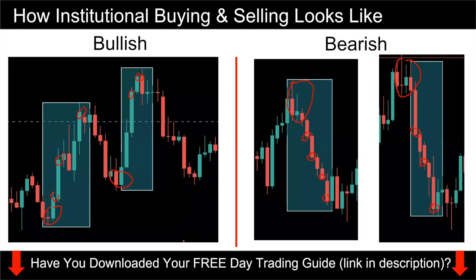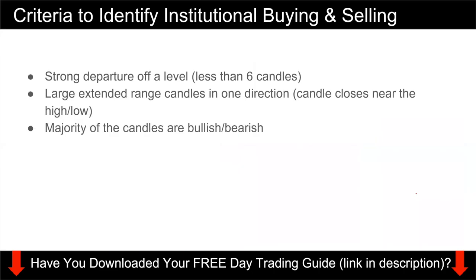In an institutional buying situation, you want the majority of candles to be green — bullish is green, red is bearish. In the bullish case, you see a lot of green candles — in one example, there's only one red candle. Conversely, on the bearish side, you have a lot of red candles and only one green candle. These are the three criteria.